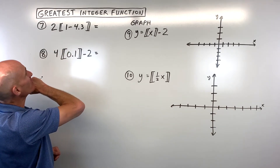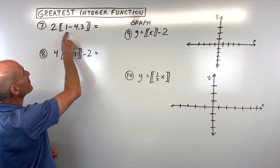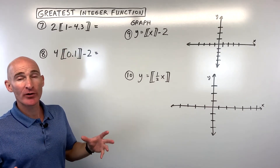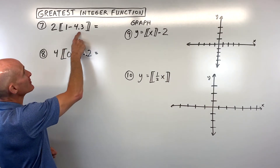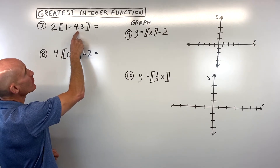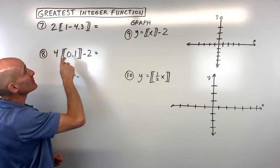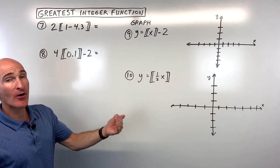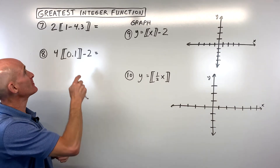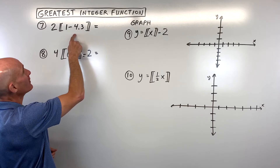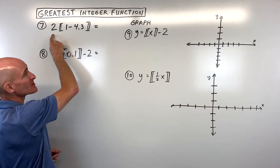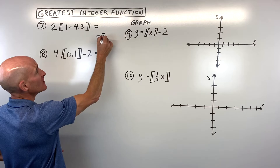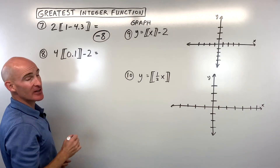Let's look at number 7. We follow our order of operations — start on the inside, work our way out, just like working with parentheses. 1 minus 4.3 is negative 3.3. We round to the left on the number line, which makes this negative 4. Then negative 4 times 2 is equal to negative 8.